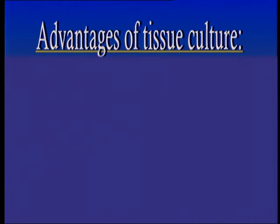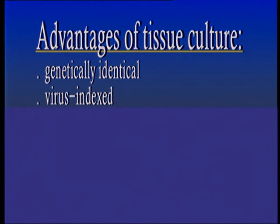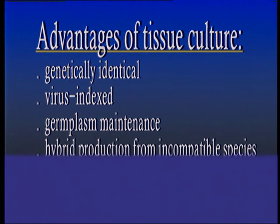There are several benefits attached to plant tissue culture. The number of genetically identical plants recovered from a single stock plant is greatly increased. Virus-indexed plants may be obtained through tissue culture, for example by meristem culture. Stock plants may be maintained in vitro where glasshouse space is at a premium — this is referred to as germplasm maintenance. Tissue culture techniques may also be used to obtain hybrids from incompatible species through embryo or ovule culture.